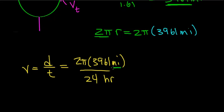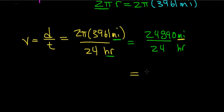Note the units will be miles per hour for tangential velocity. When we calculate 2π times 3,961, we get 24,890 miles. Dividing by 24 hours gives units of miles per hour. When you divide 24,890 by 24, you get 1,037 miles per hour.